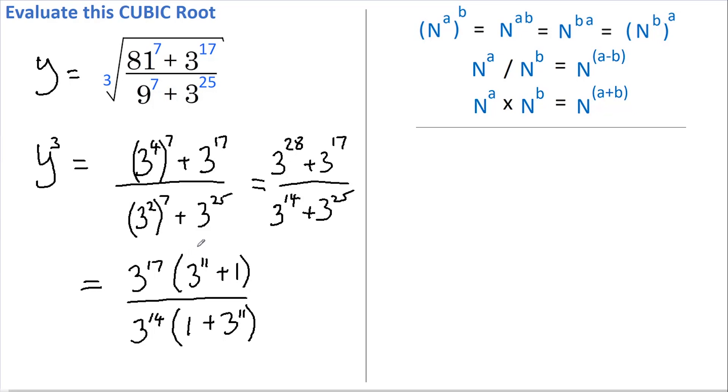If you're wondering how I got 3 to the 11 here, it's because when I pull 3 to the 17 out of 3 to the 28, I deduct the powers. That's in accordance with rule number 3. So on the top, 17 plus 11 gave us our 28, and 14 plus 11 gives us our 25. Now you should see that this is worked out really nicely because in the brackets we have 3 to the 11 plus 1 and 1 plus 3 to the 11, which are identical, so they cancel out.